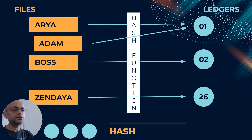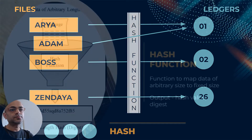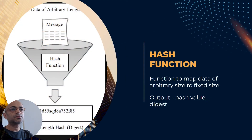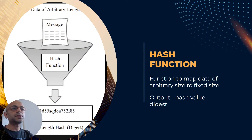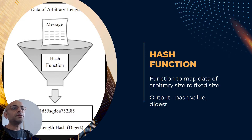The mapping is the hash function. A hash function is a function which maps data of arbitrary size to a fixed size, and the output is known as the hash value or the digest.